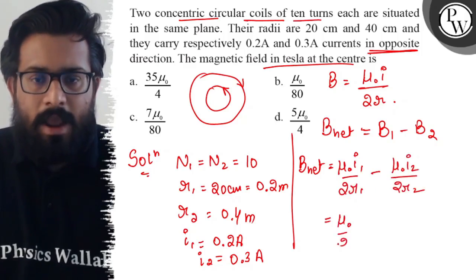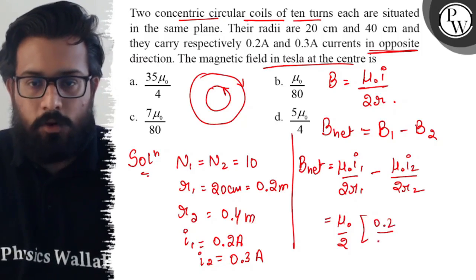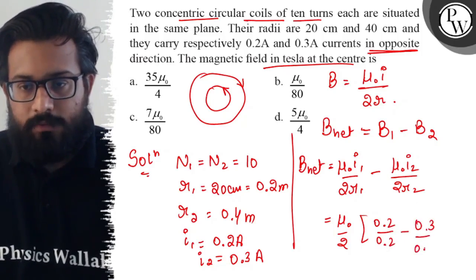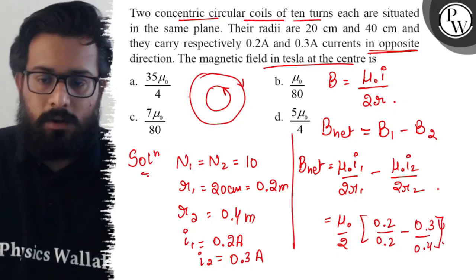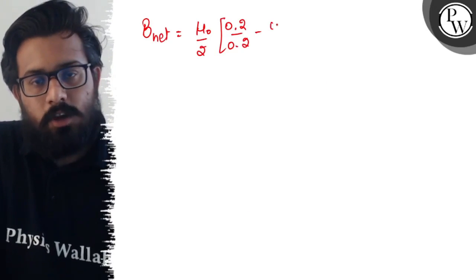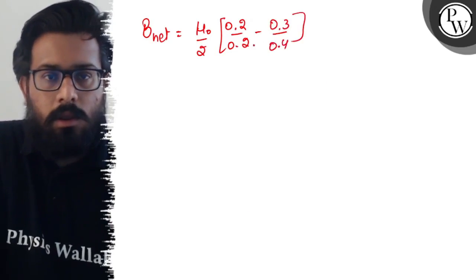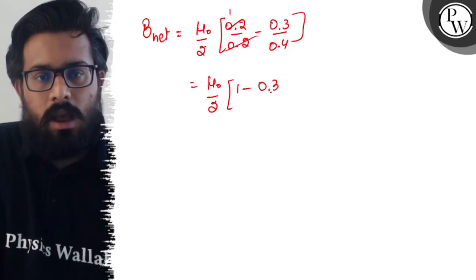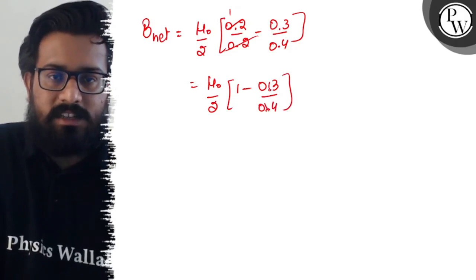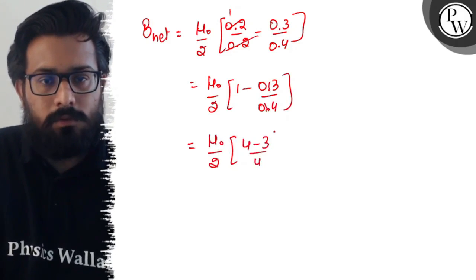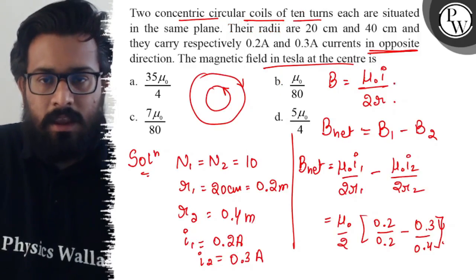Putting the values: 0.4 for r₂, and if you solve this part, the value of B_net comes out as μ₀/2 times [0.2/0.2 minus 0.3/0.4]. So it comes out with μ₀/2 times [1 minus 0.3/0.4], which is μ₀/2 times [4 minus 3]/4.